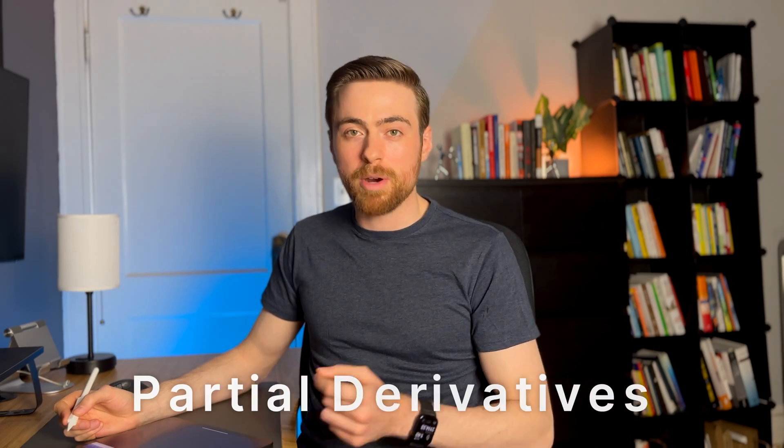All right, so now that we know what a derivative is, let's cover what a partial derivative is. Previously our function may have looked something like this: Y equals f(x), which equals x squared. There was only one term, only one x value. But now what happens if there's multiple variables? So let's say our function looks like this: Y equals f(x0, x1), which equals x0 squared plus x1 squared.